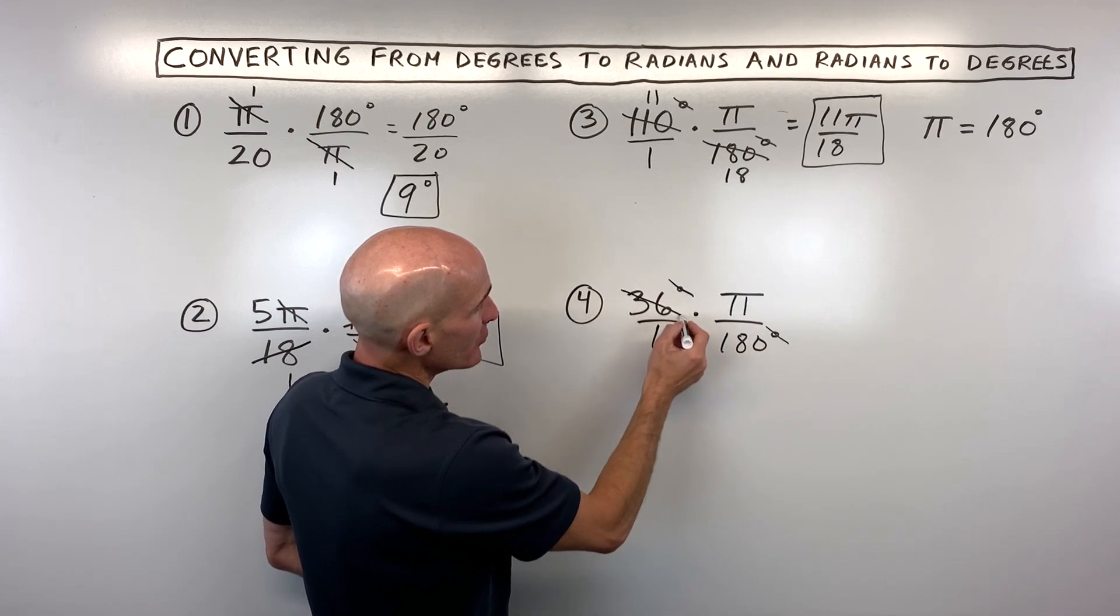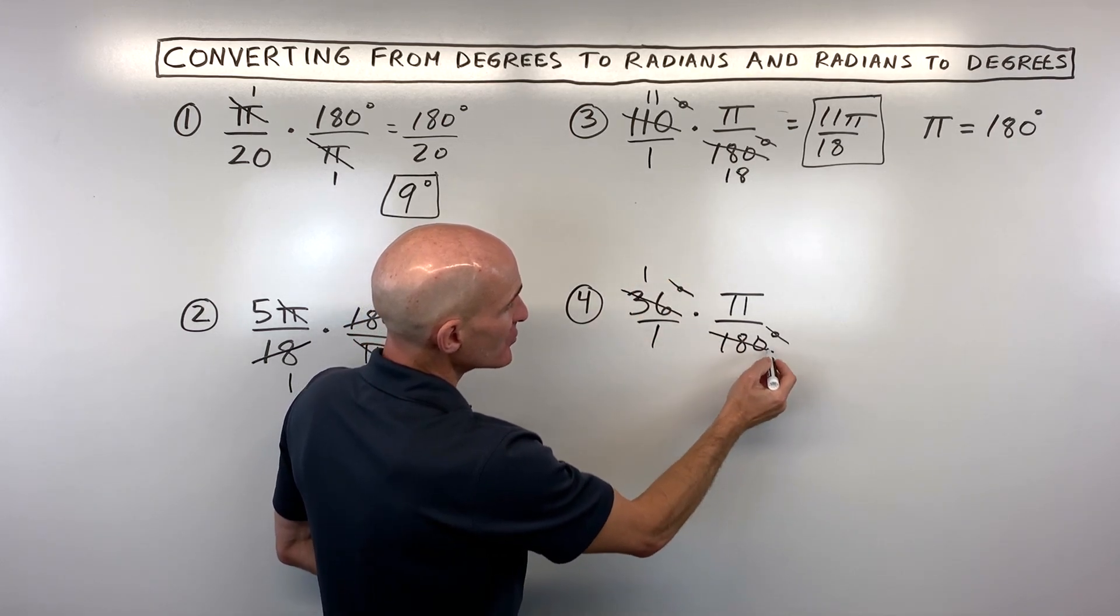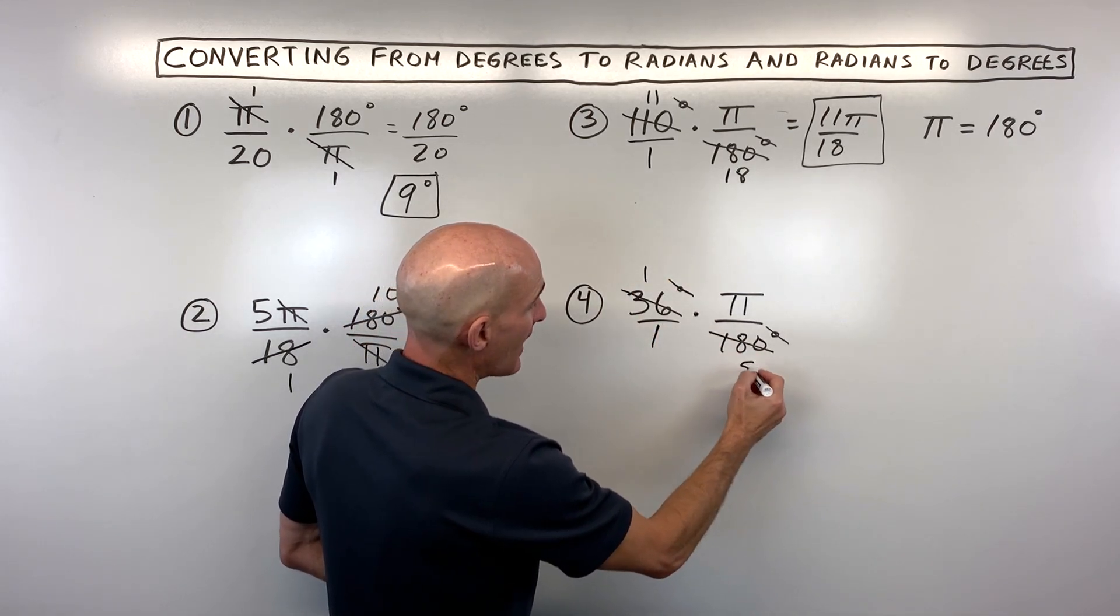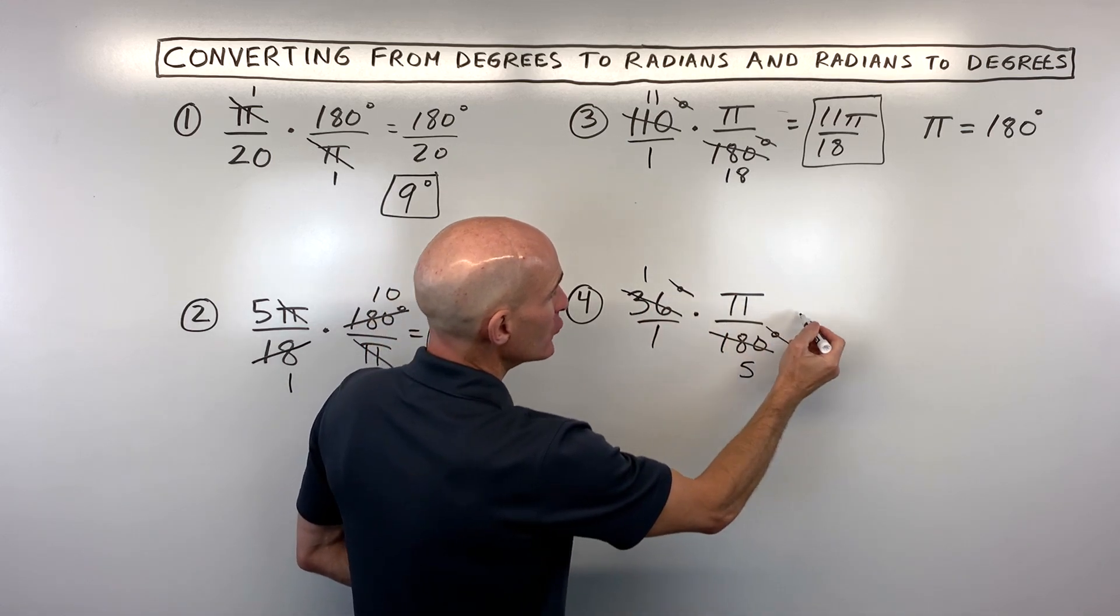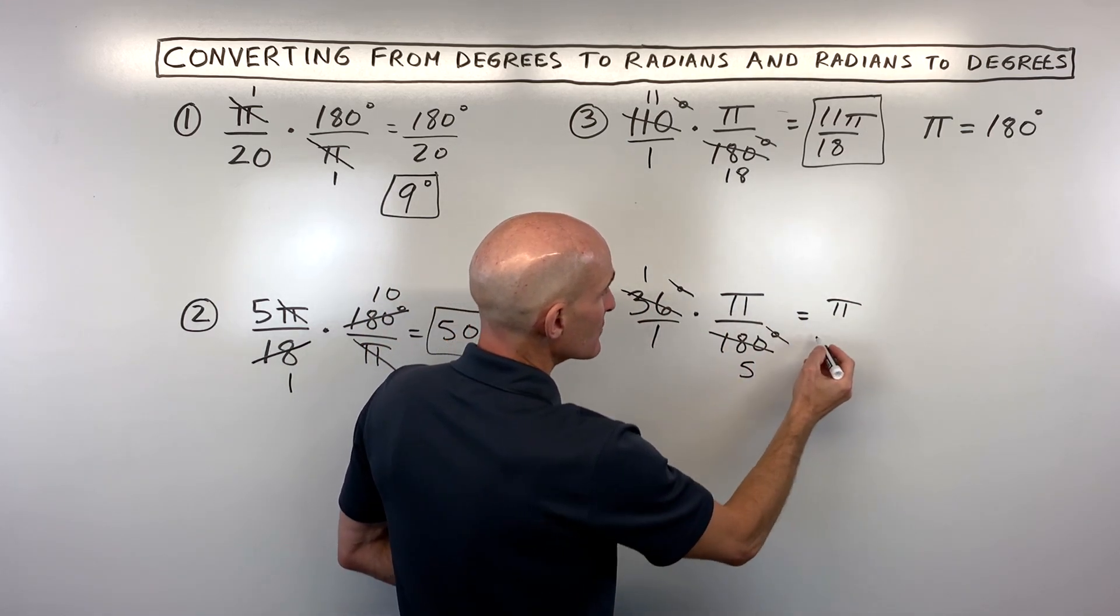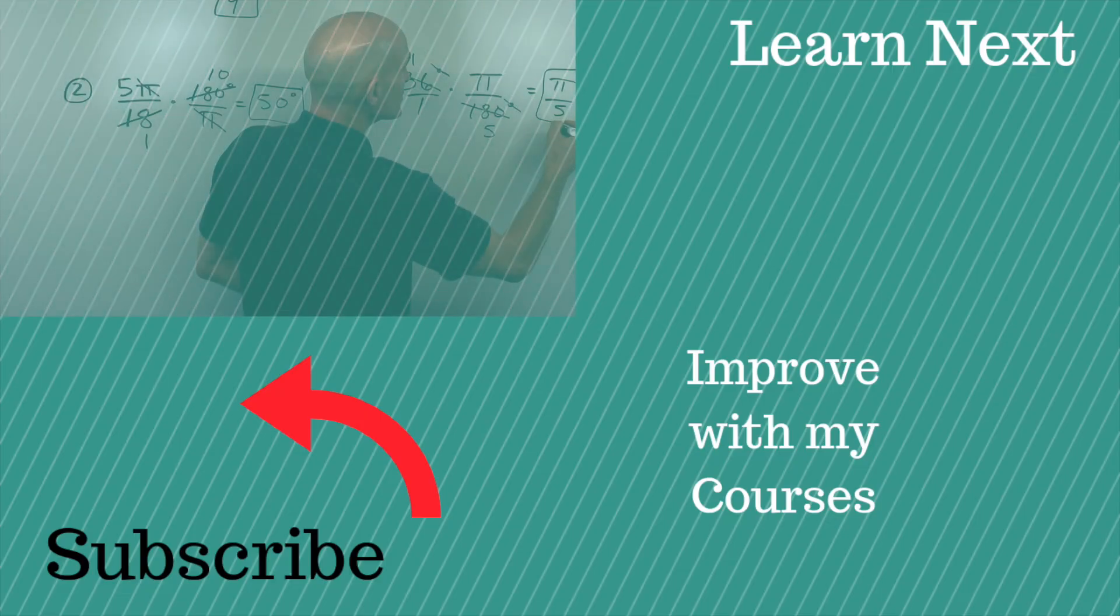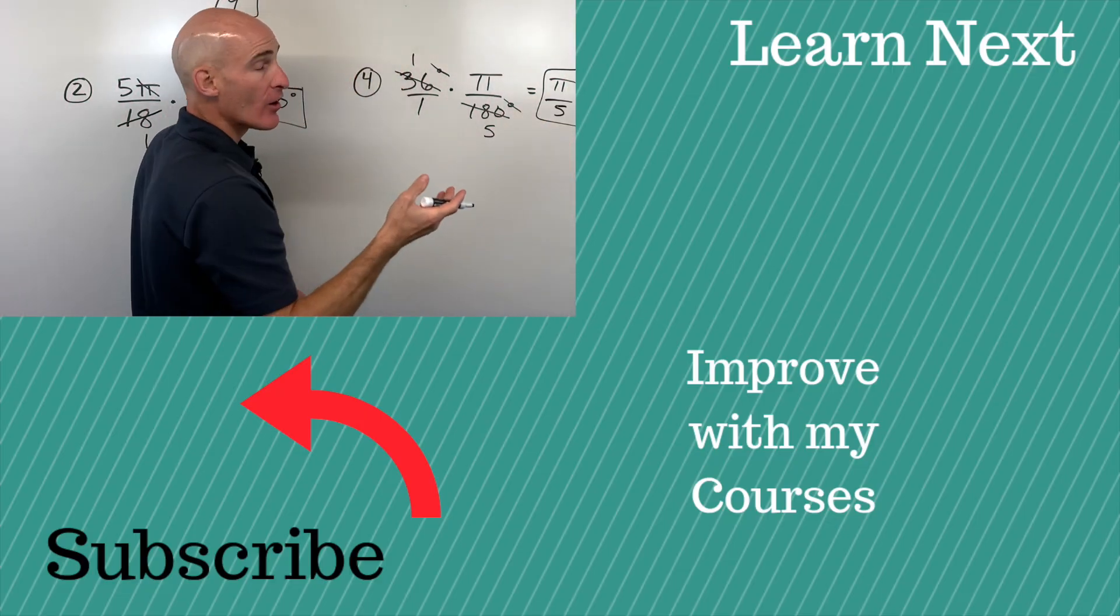Now I can do a little bit more reducing here. 36 goes in here once. 36 goes into 180 5 times. Then when I multiply the numerators together, I get pi. And 1 times 5 is 5. So this is going to be pi over 5 radians.